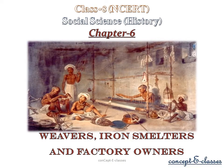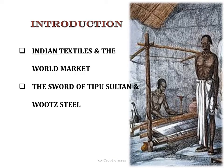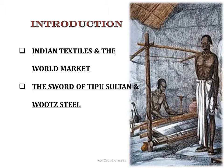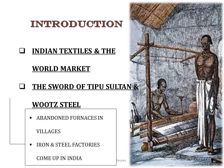This is Concept E Classes and today we'll study Chapter 6 of Class 8 NCERT History: Weavers, Iron Smelters and Factory Owners. In this chapter, we'll first see about Indian textiles and the world market, then about Indian textiles in European markets, who the weavers were, what happened to Indian textiles, the cotton mills, the sword of Tipu Sultan, wootz steel, abandoned furnaces in villages, and the iron and steel factories that came up in India.